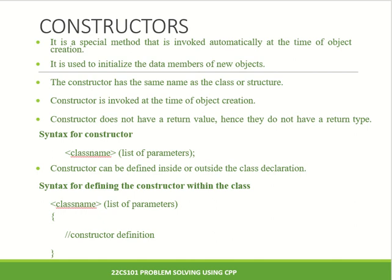The constructor does not have a return value — there is no return type in a constructor. So these are the three things: one, the constructor name and the class name should be the same; two, the constructor is invoked at the time of object creation; and three, the constructor does not have a return type. The syntax for a constructor is the class name followed by a list of parameters within brackets. The constructor can also be defined either inside or outside the class declaration.